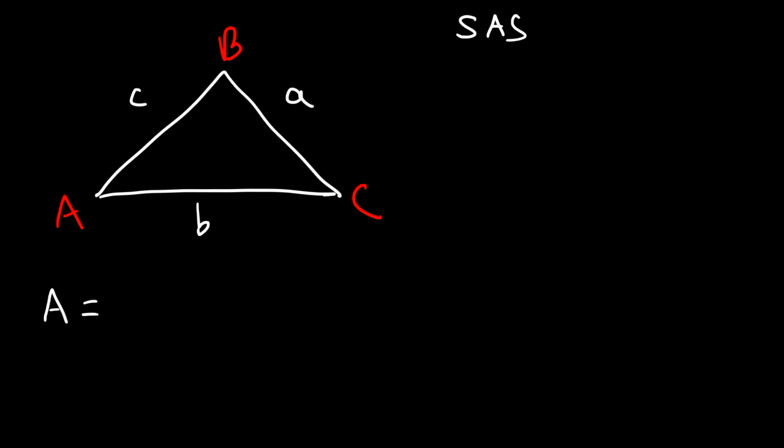There's three formulas that you can use. The one that I recall the most is this one, 1 half AB sine of angle C. So if we have a side, an angle, and a side, so we need the included angle, the angle that's between those two sides, we can find the area of the triangle.